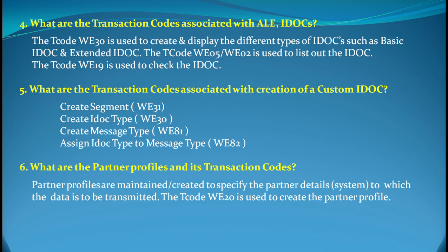The fourth question is: what are the transaction codes associated with ALE IDocs? WE30 is used to create and display different types of IDocs such as basic IDocs and extended IDocs. WE05 or WE02 is used to list out IDocs, and WE19 is used to check IDocs. So: WE30 to create and display, WE05 or WE02 to list, and WE19 to check IDocs.